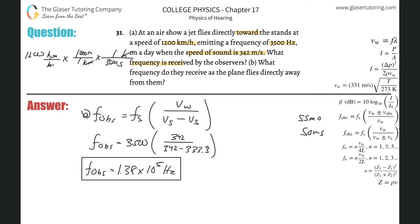Letter B asks what frequency they receive as the plane moves away. That's just the other formula now. Instead of minus, it's going to be plus on the bottom. Frequency of the observer equals 3500 times 342 divided by 342 plus 333.3 repeating. This is about 1772, or 1.77 times 10 to the 3rd hertz.